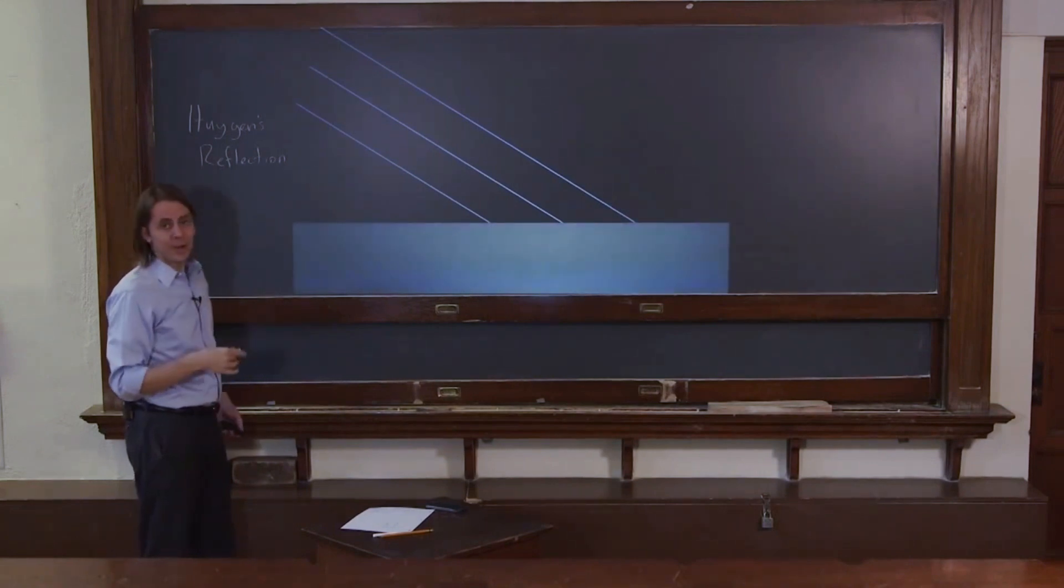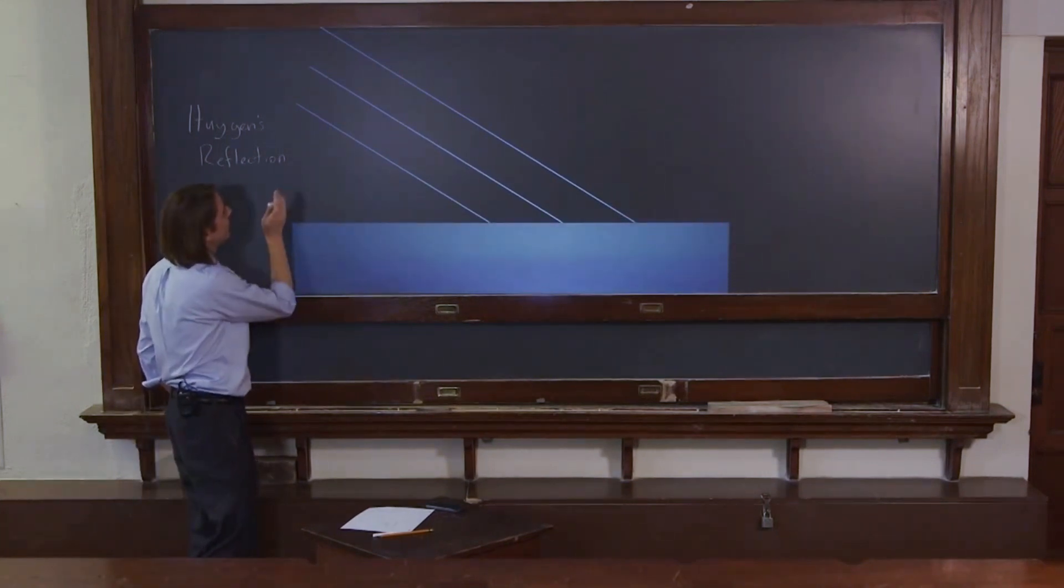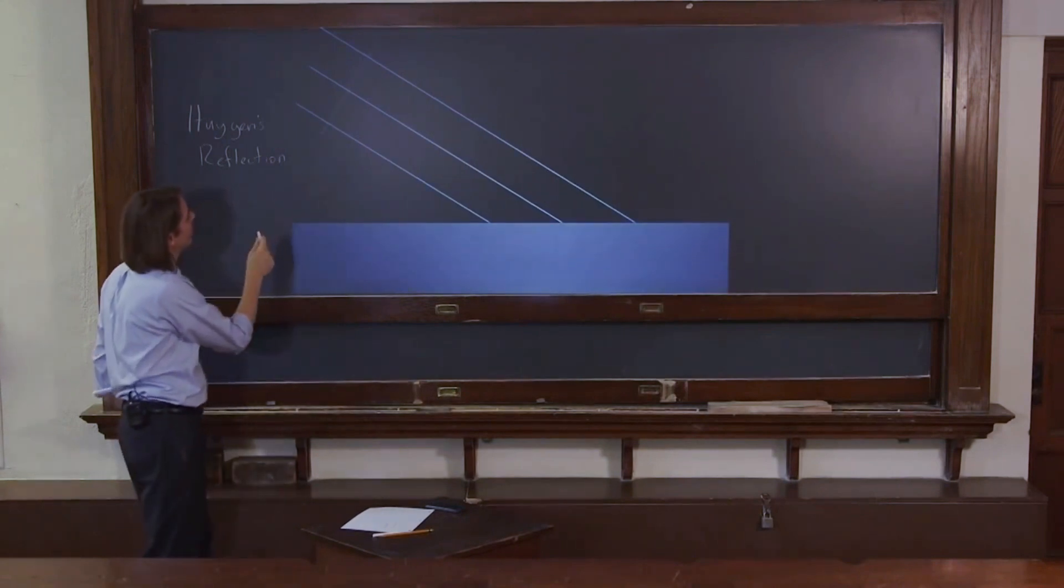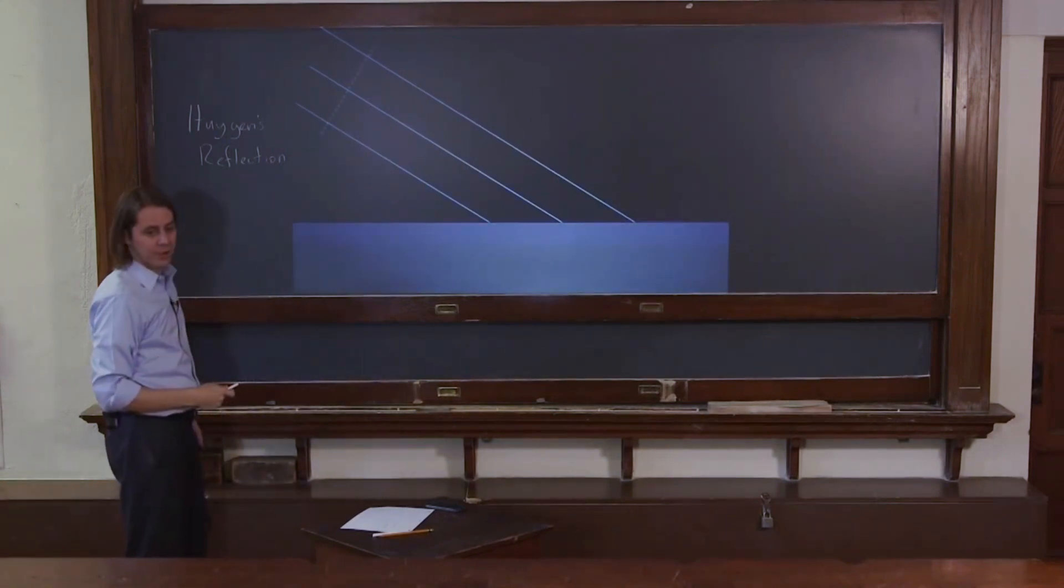To think about Huygens', we say it's a plane wave. So we're going to think about the wave front for a plane wave. That's a surface, looks kind of like that.